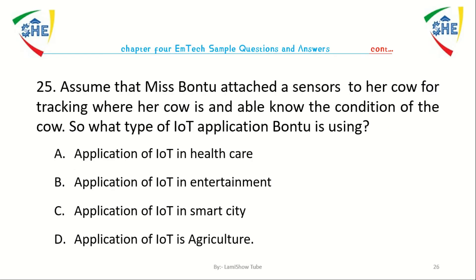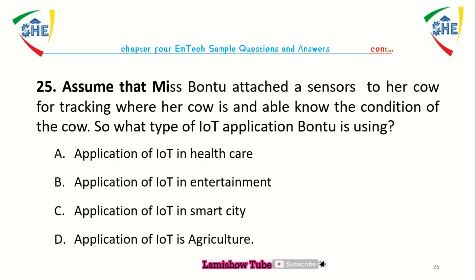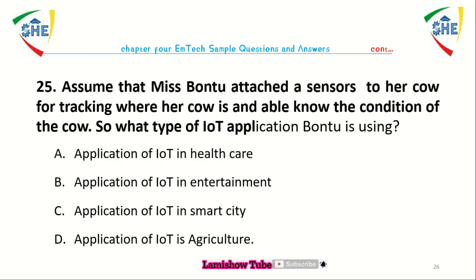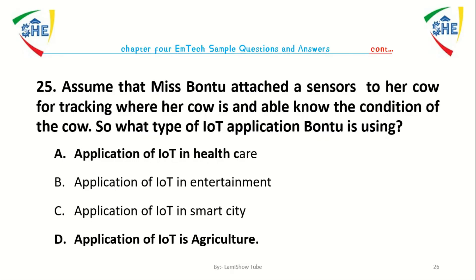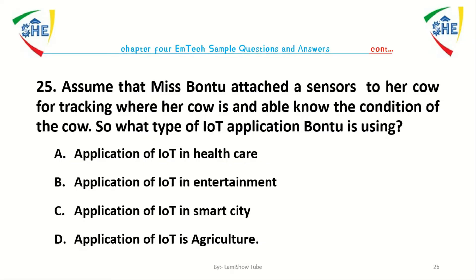Question number twenty-five: Assume that Miss Bontu attached a sensor to her cow for tracking where her cow is and is able to know the condition of the cow. What type of Internet of Things application is Bontu using? A. Application of IoT in healthcare, B. Application of IoT in entertainment, C. Application of IoT in smart city, D. Application of IoT in smart agriculture.